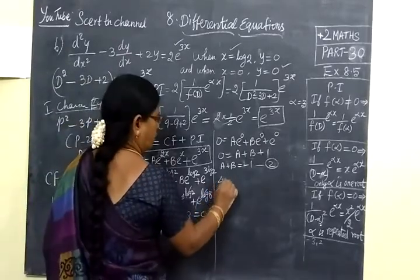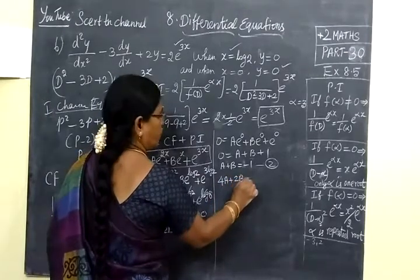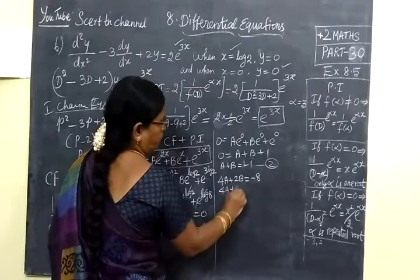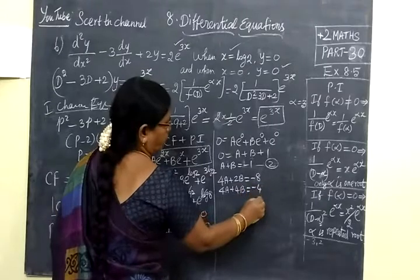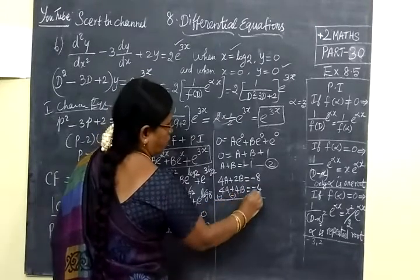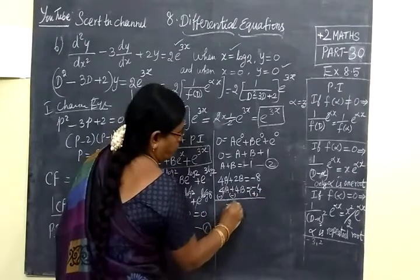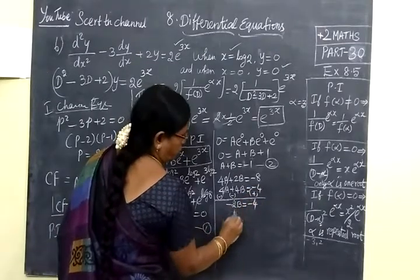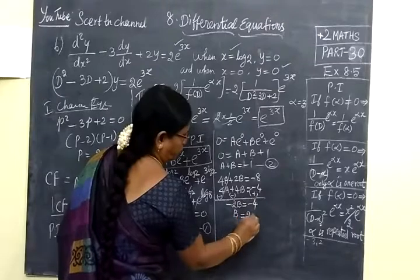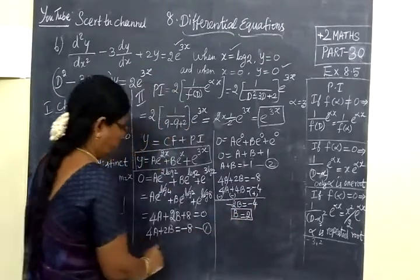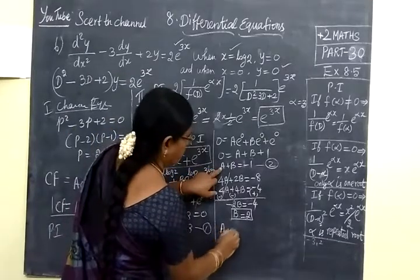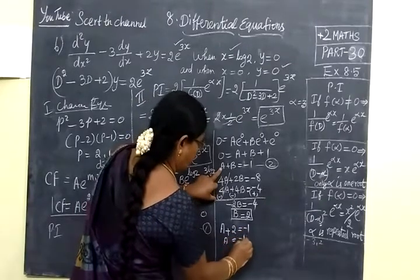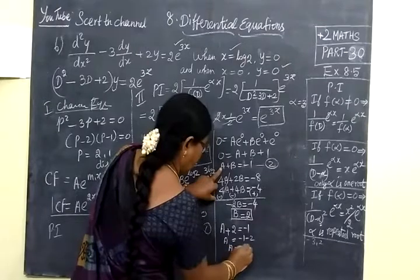So from 1 and 2 we are writing 4A plus 2B = -8. If we multiply 4 here, 4A plus 4B = -4. Now change the sign, 4A cancels, so -2B = -4. So B = 2. Now substitute B = 2 in this equation, so A plus 2 = -1, so A = -3.